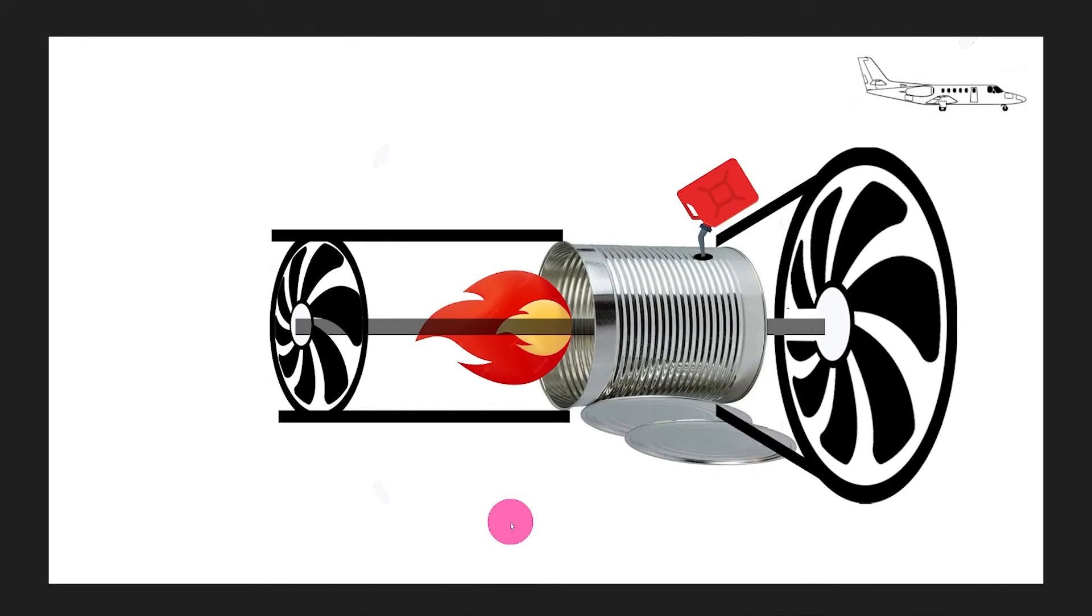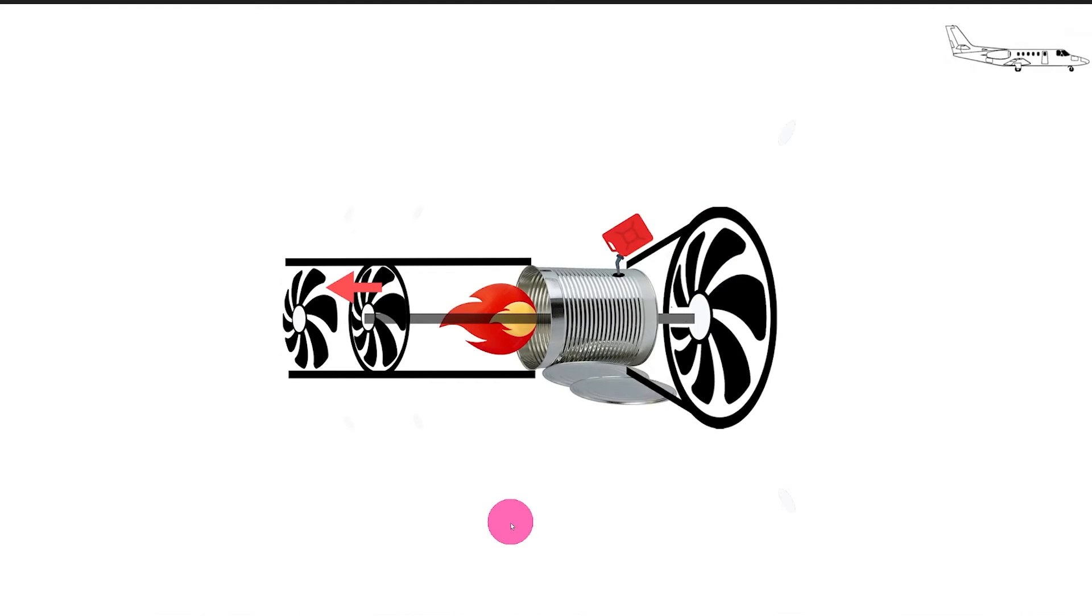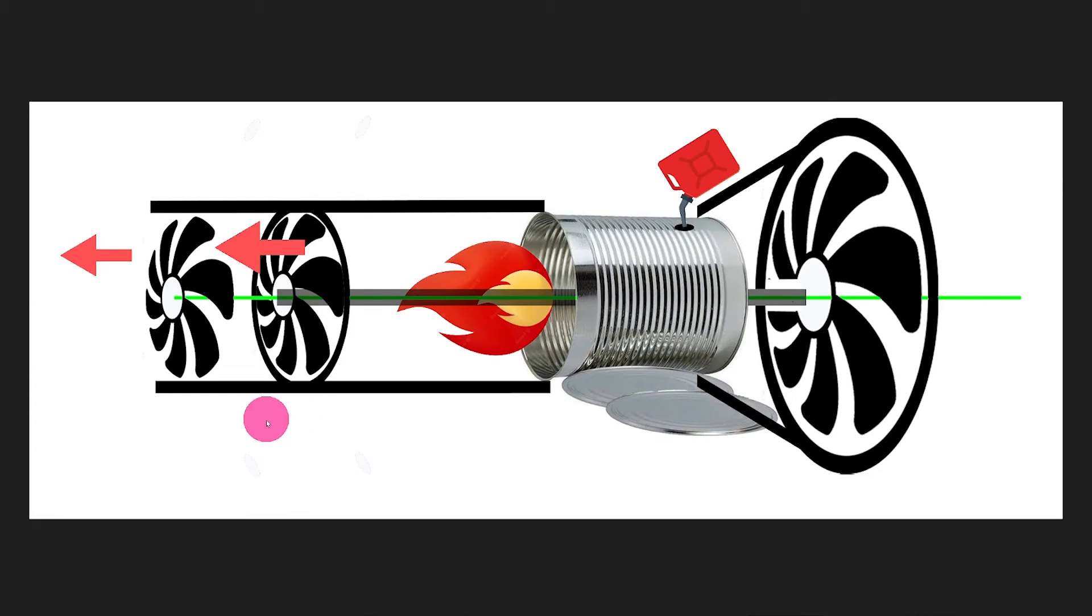So here again is our pure jet engine. As pilots, we may refer to it as our N2. Well let's add another turbine in the back to capture some of that leftover wind that passed through our first turbine.